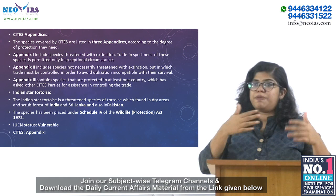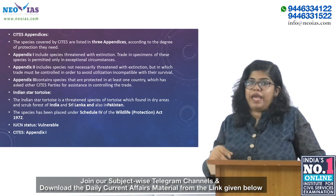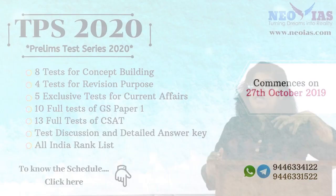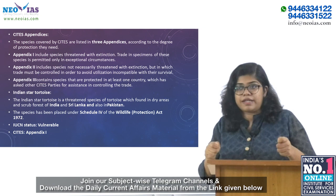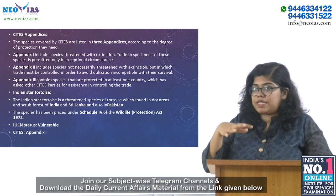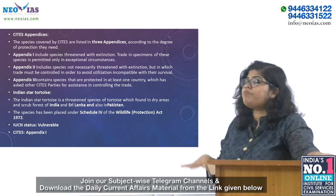Appendix 1 includes species threatened with extinction — trade in specimens of these species is permitted only in exceptional circumstances. Appendix 2 includes species not necessarily threatened with extinction, but whose trade must be controlled to avoid utilization incompatible with their survival. Appendix 3 contains species protected in at least one country that has asked CITES parties for assistance in controlling trade. The Indian star tortoise, found in dry areas and scrubs of India, Sri Lanka and Pakistan, is under Schedule 4 of the Wildlife Protection Act 1972, has an IUCN status of Vulnerable, and is placed in Appendix 1 of CITES.